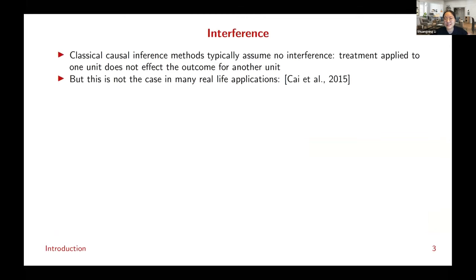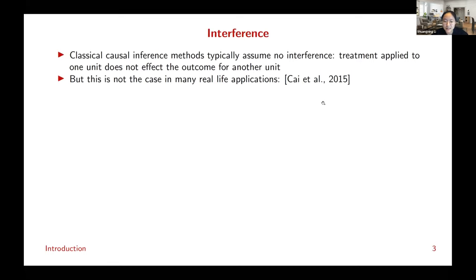Before I go into the details of treatment effect estimation, I want to start with a brief introduction on interference. Classically, when people do causal inference, we usually assume there is no interference — that is, treatment applied to one unit does not affect the outcome for another unit. But this is not the case in many real-life applications.